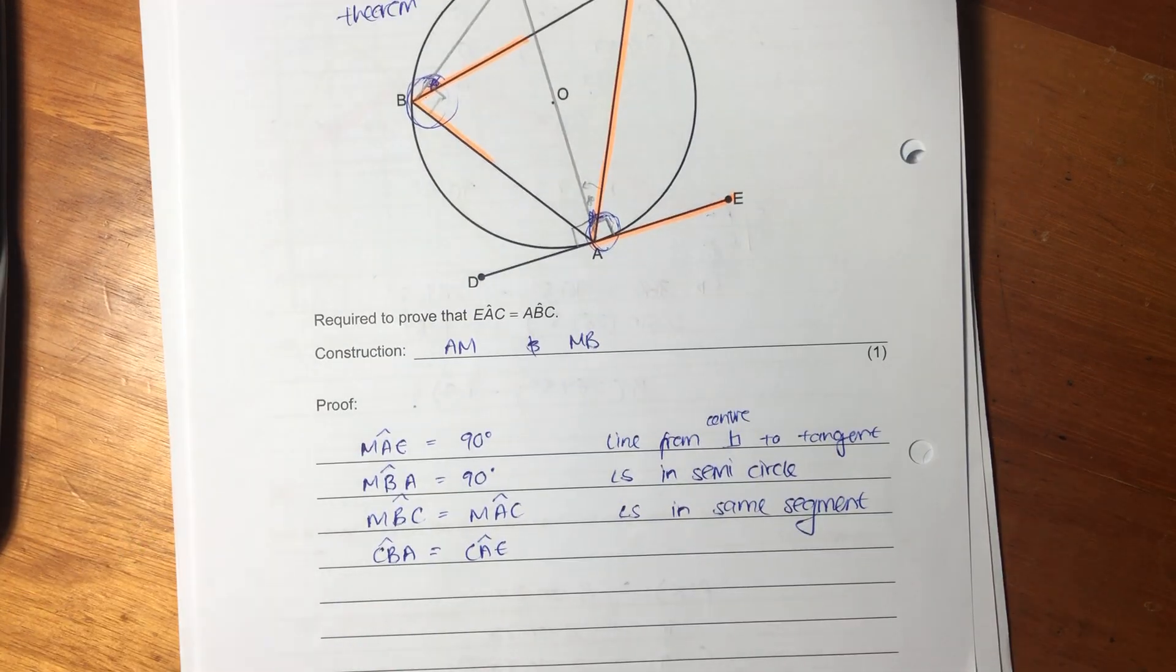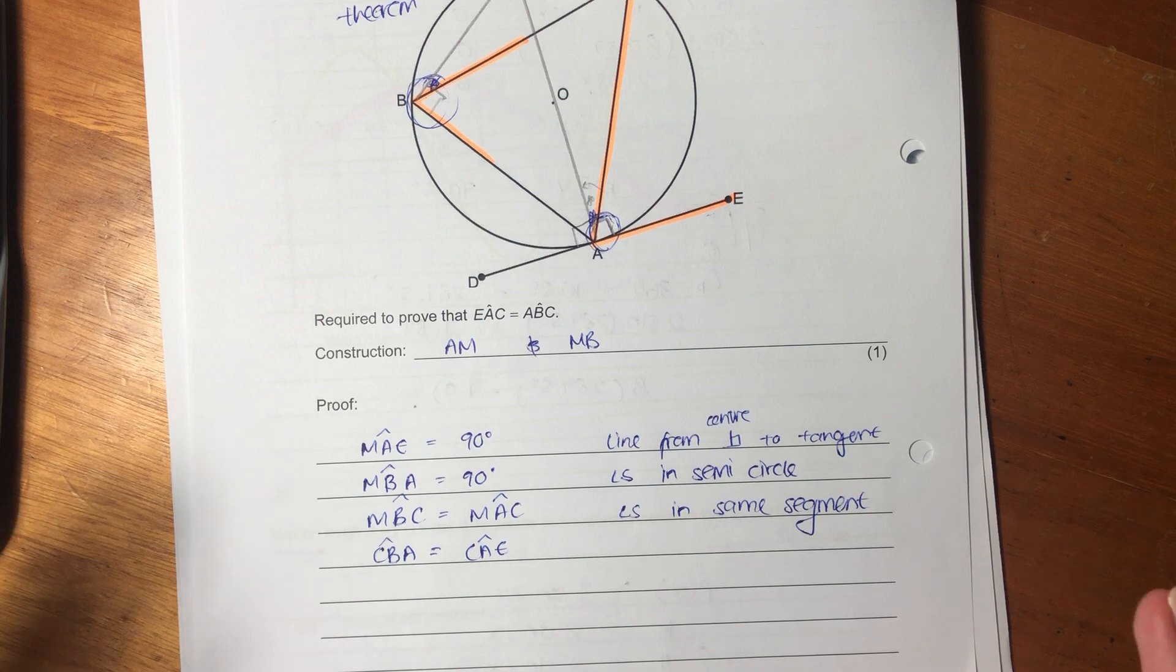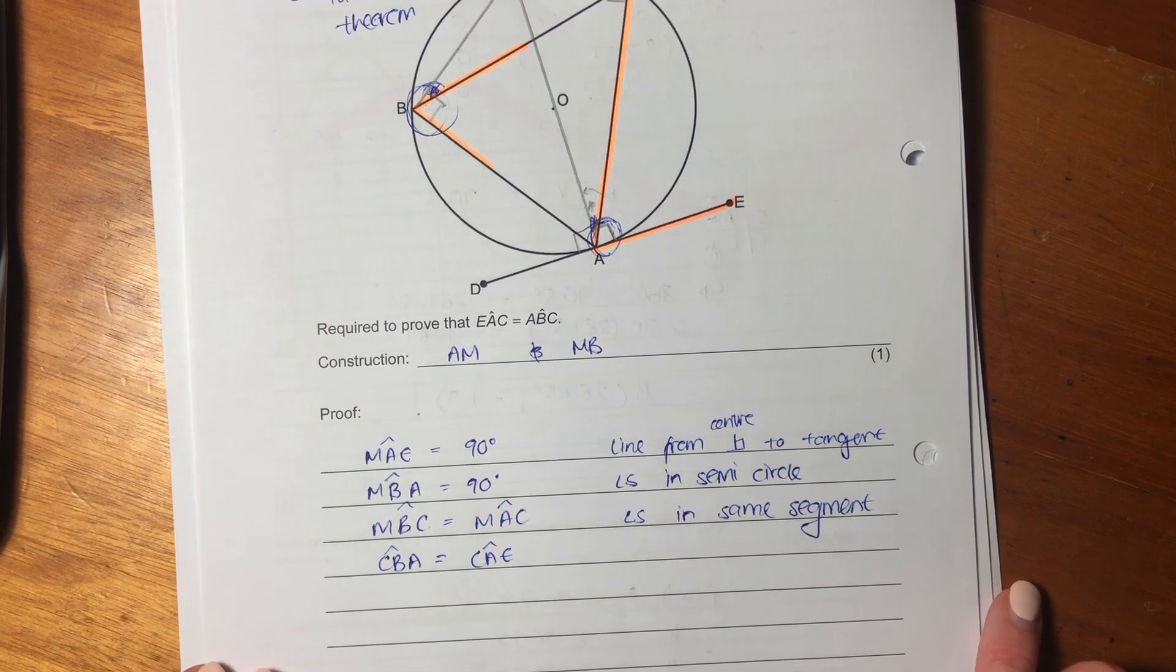So we have therefore proven our tan chord theorem. So sometimes this can be very tricky, but I'm trying to make it as obvious as possible. So if you don't like this explanation, fair enough. You're welcome to say you don't enjoy it. But go to the memo and there's an alternative one there. I personally don't like it, but there is an alternative.